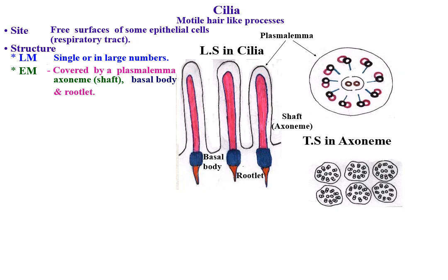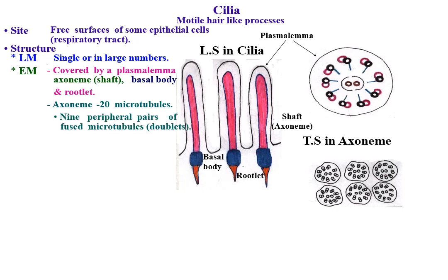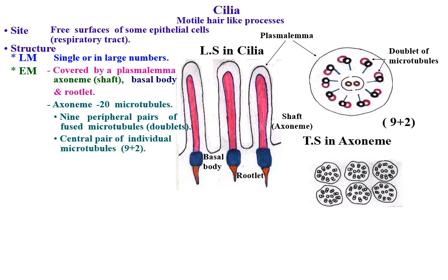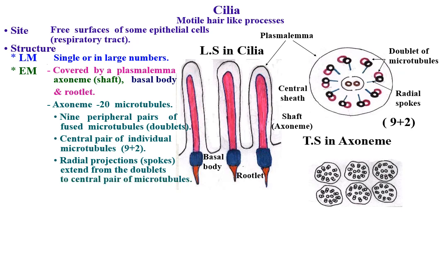The axoneme or shaft is a protoplasmic core of cytoplasm containing 20 microtubules: nine peripheral pairs of fused microtubules (doublets) forming a ring around a central pair of individual microtubules (9+2). Radial projections or spokes extend from the doublets to the central pair of microtubules.